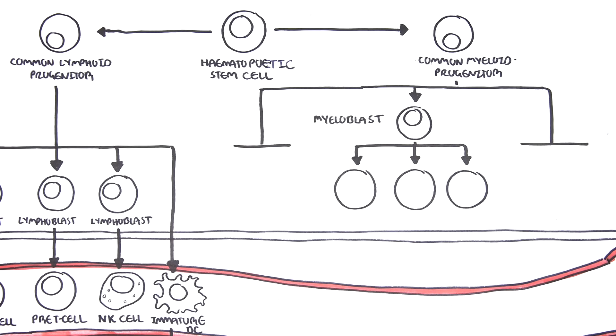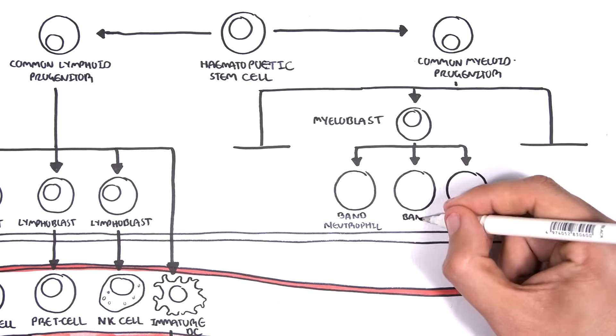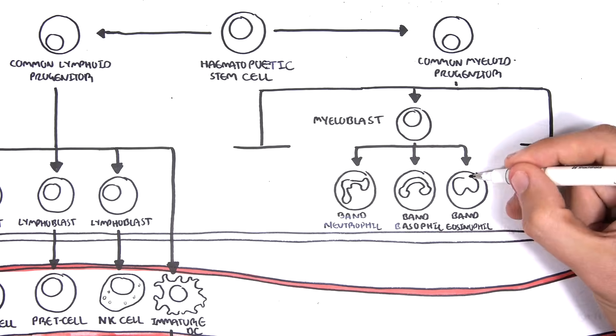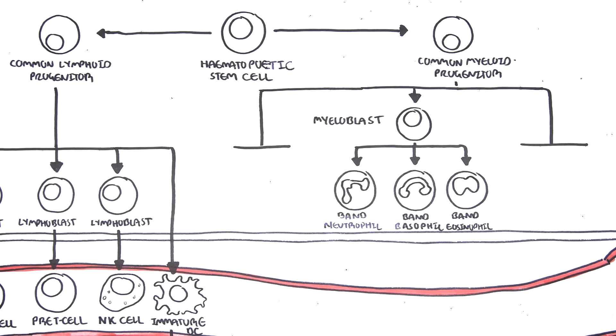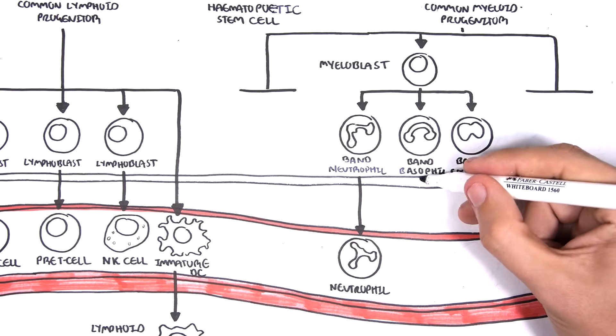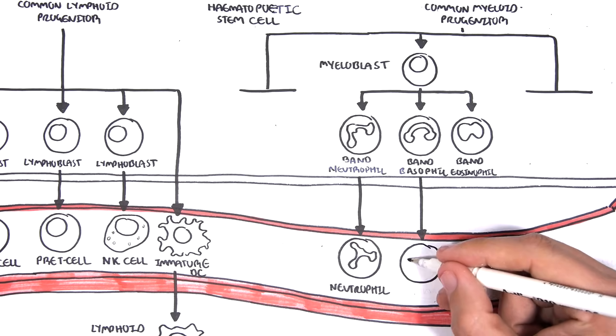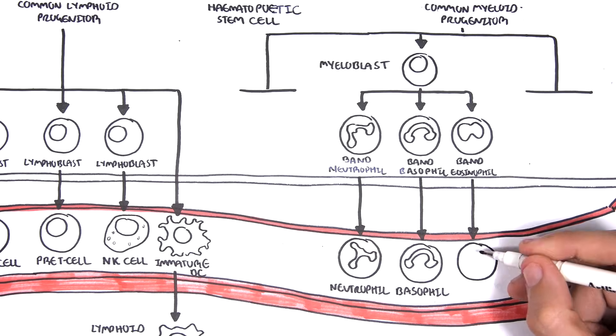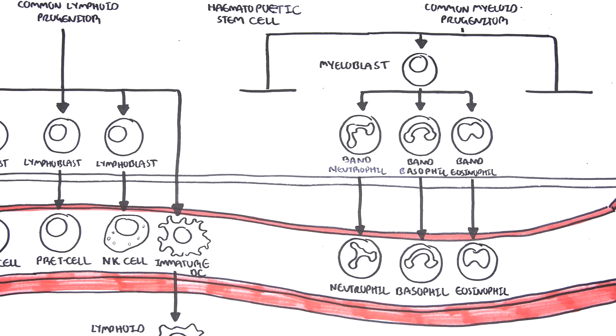The common myeloid progenitor cell can become myeloblasts and eventually become granulocytes. These granulocytes are cells containing granules and can either be banded neutrophils, banded basophils, and banded eosinophils. These granulocytes are banded cells because they are immature. Once they enter the circulation, they mature and become neutrophils, basophils, and eosinophils respectively. Neutrophils are important in the acute response to infection and inflammation. Basophils are important in allergy and parasitic infections. And eosinophils are also important in allergies and sensitivity.